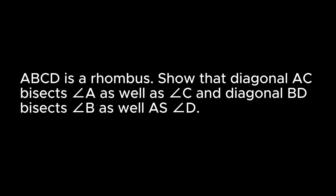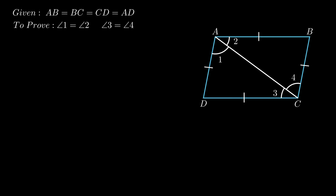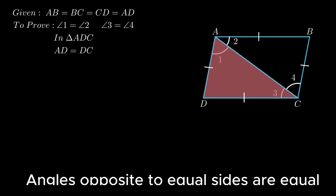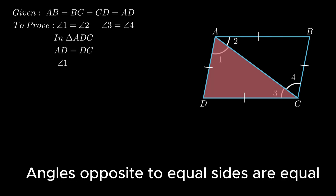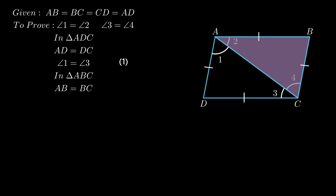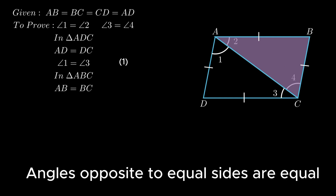The next problem states: in rhombus ABCD, diagonal AC bisects angle A as well as angle C, and diagonal BD bisects angle B as well as angle D. Since ABCD is a rhombus, all sides are equal. Let AC be the diagonal making angles 1, 2, 3 and 4. We need to prove angle 1 = angle 2 and angle 3 = angle 4. In triangle ADC, since AD = DC, the angles opposite to equal sides are equal, so angle 1 = angle 3. Similarly in triangle ABC, since AB = BC, angle 2 = angle 4.